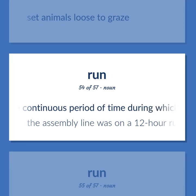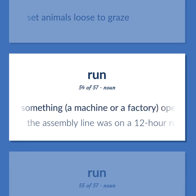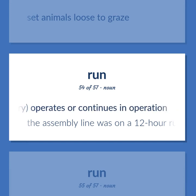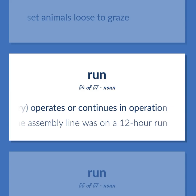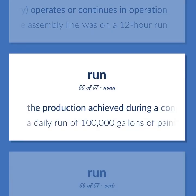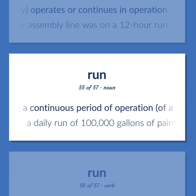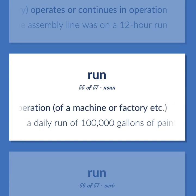The continuous period of time during which something — a machine or a factory — operates or continues in operation. The assembly line was on a 12-hour run. The production achieved during a continuous period of operation of a machine or factory. A daily run of 100,000 gallons of paint.